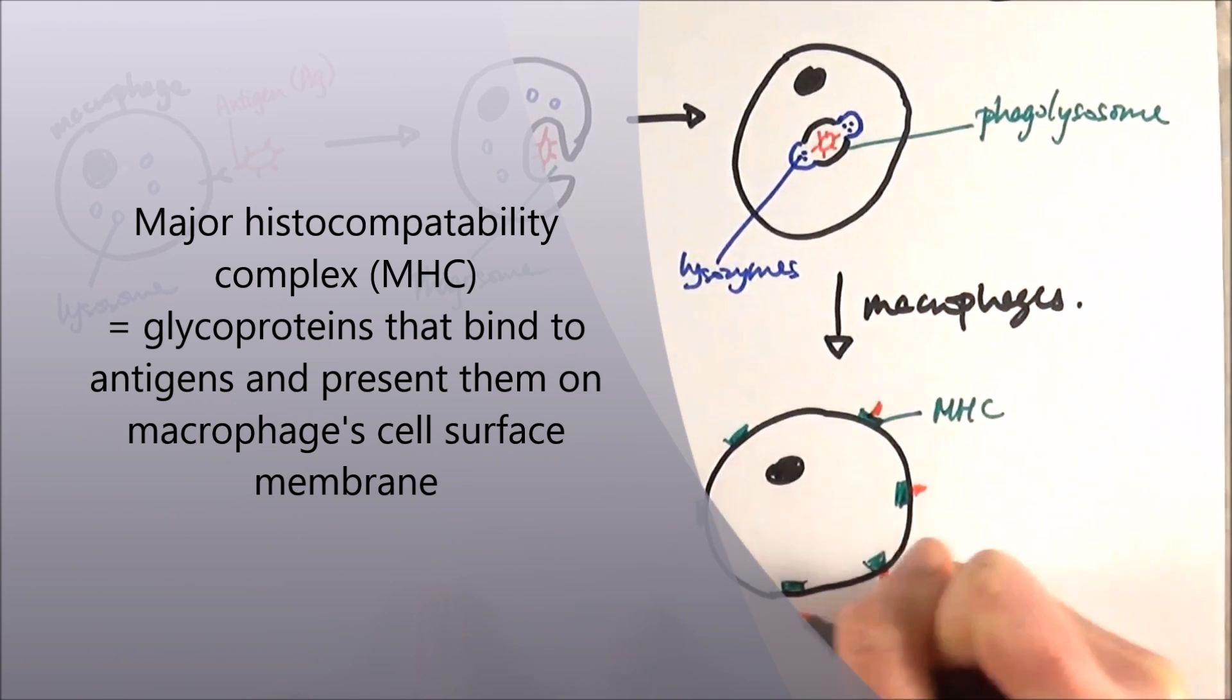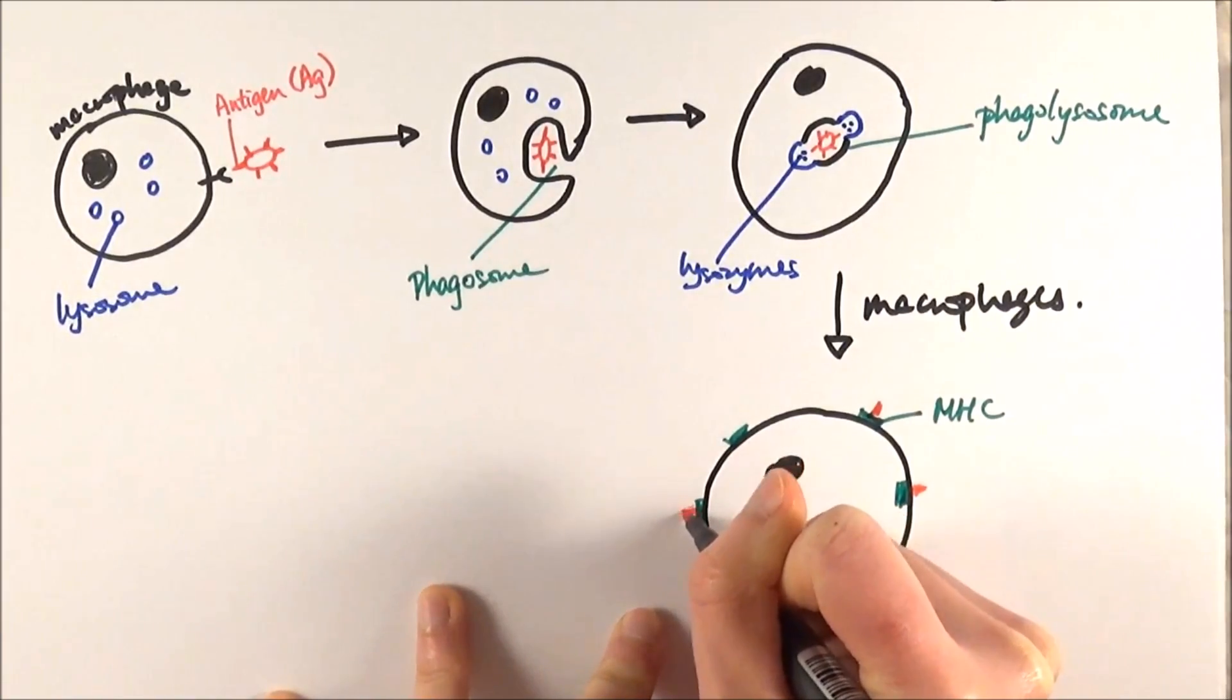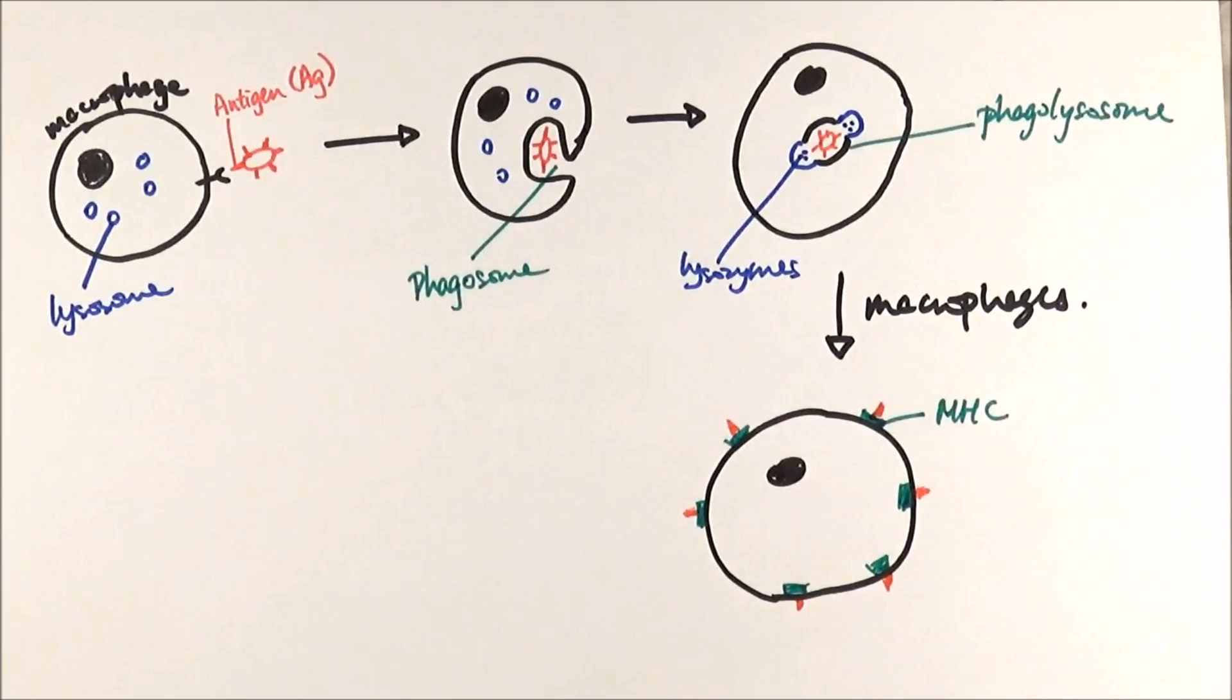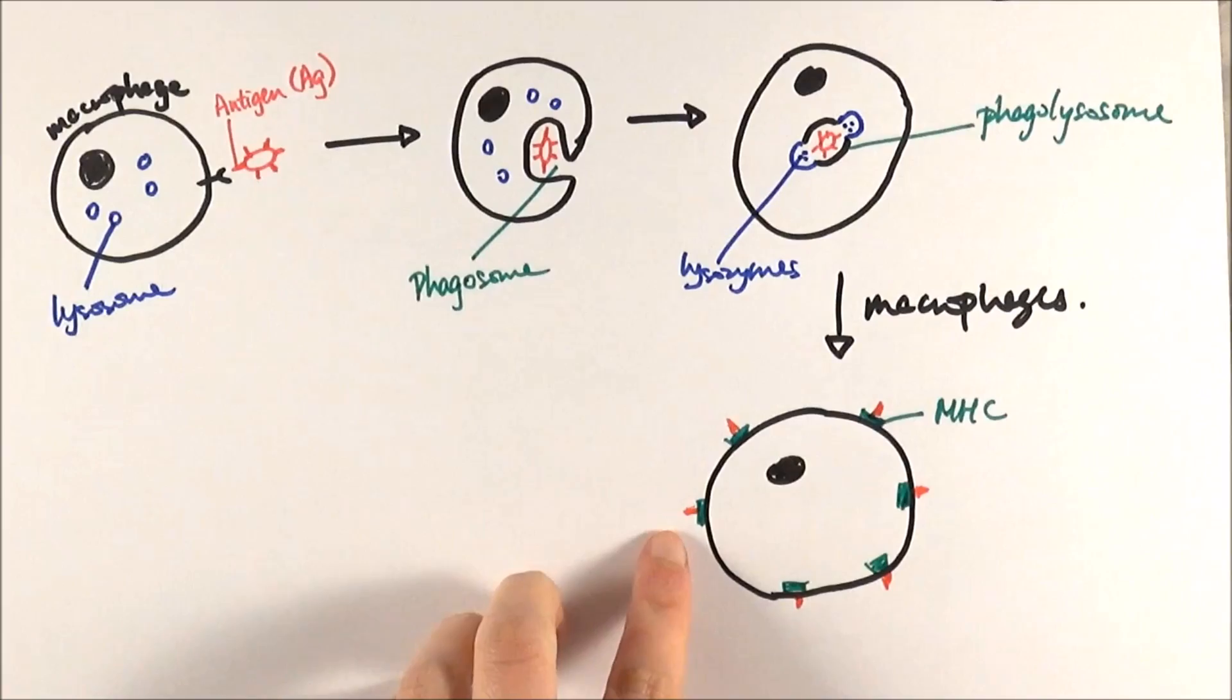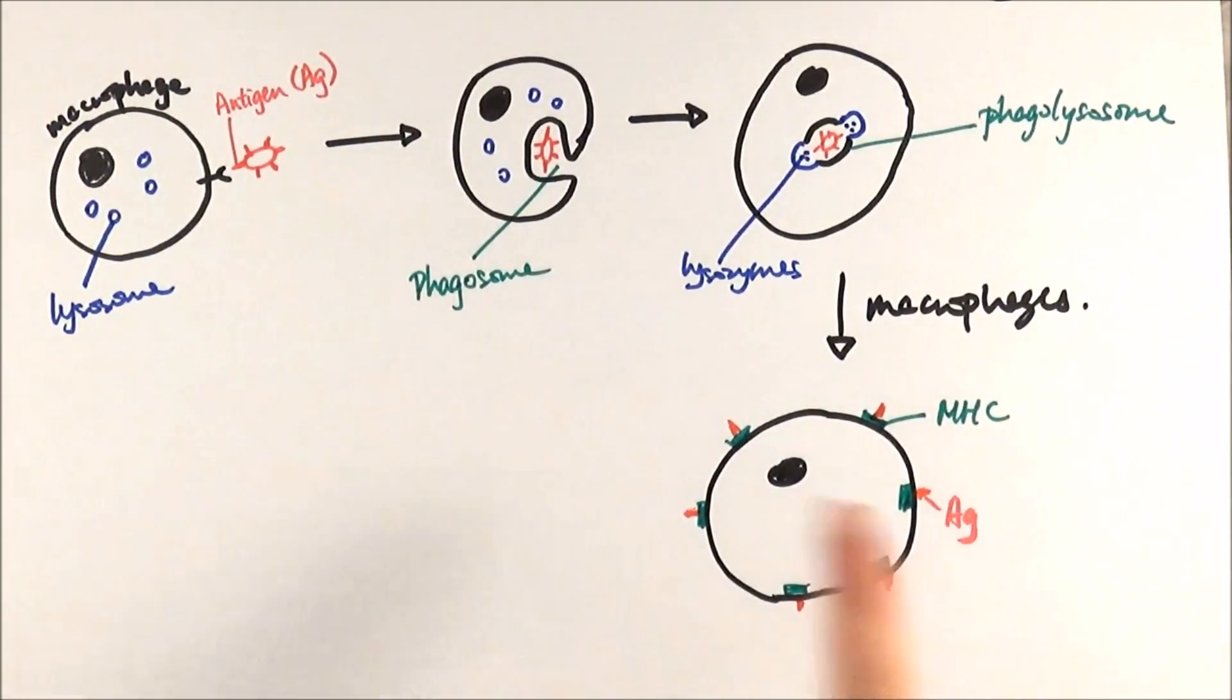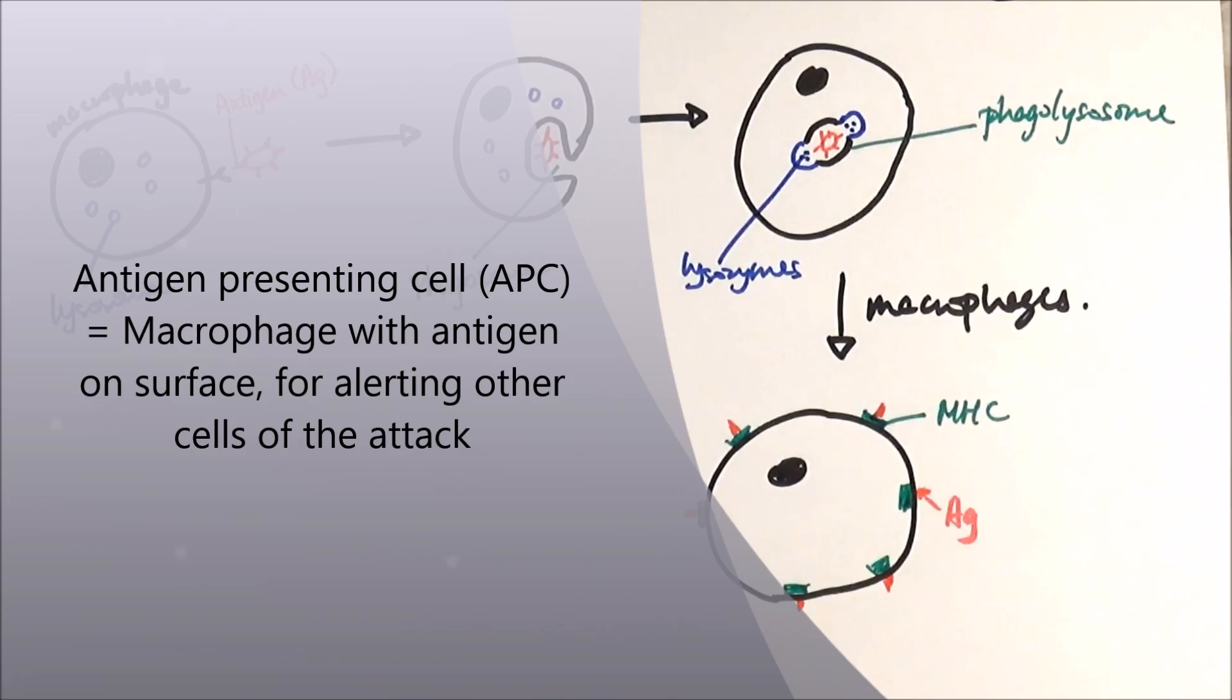And these antigens will then get recognised by other white blood cells, basically sending a cascade down to alert all the other white blood cells that we are under attack and we need to recognise this specific pathogen. And so this entire cell, this macrophage, has now become what we call an APC, antigen presenting cell.